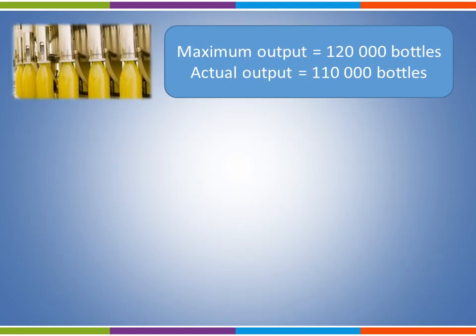Let's assume that the actual output of our business has increased to 110,000 bottles. The maximum output is still 120,000 bottles. The business's capacity utilisation has clearly gone up — but what is the new level? Why not pause the video whilst you calculate the new level of capacity utilisation?